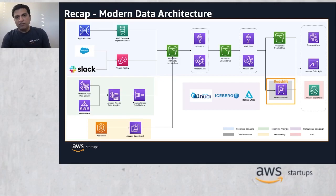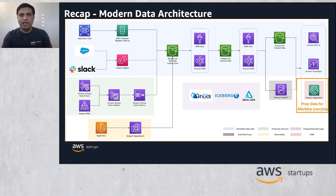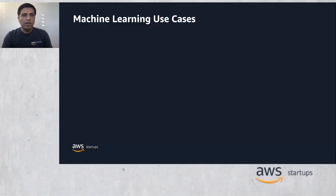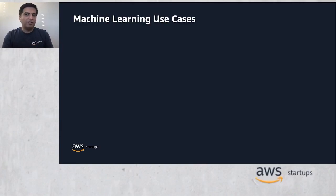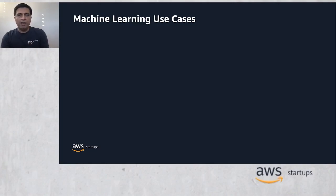In today's video, I'll talk about the importance of further processing this data for machine learning workflows, and how AWS can help accelerate this step by purpose-built tools. But before we go there, let's talk about what problems our customers are trying to solve using machine learning and modern data architecture. Here are some examples.